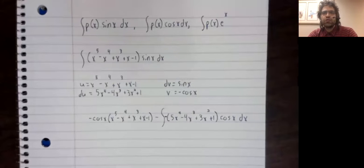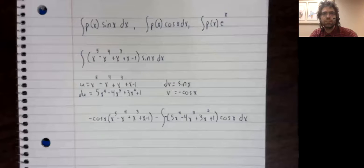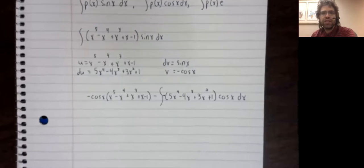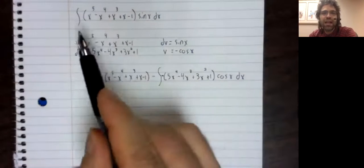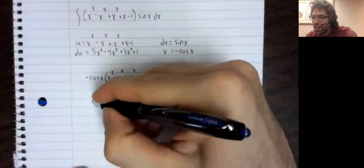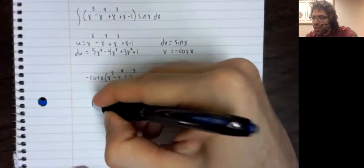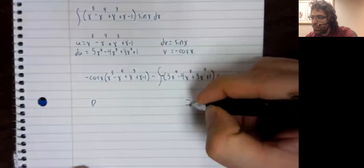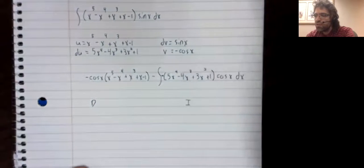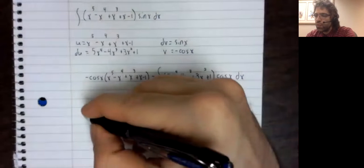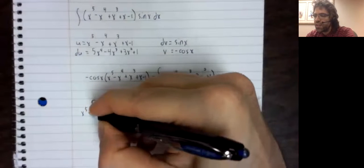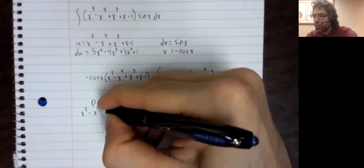And I'm going to illustrate the way this shortcut works via example. We're going to create a table. Via this example specifically, we'll create a table: polynomial, starting with the polynomial, which we'll put under D for derivative.